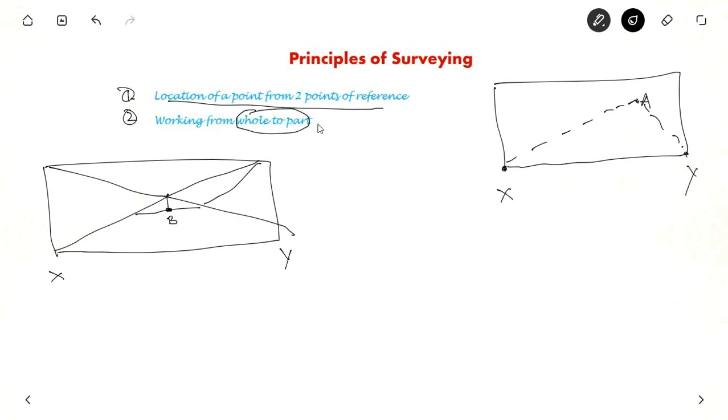But suppose if you are doing the reverse way. From B, if you are trying to measure X or some other point here, if you make an error of 1 meter here, that will get accumulated everywhere. It is not a good idea to work from part to whole. It is always best to work from whole to part, which is the principle of surveying, so that you minimize the accumulation of errors. The errors do not spread. This is the basic idea for working whole to part.